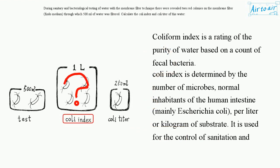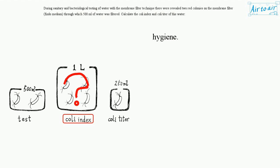Coliform index is a rating of the purity of water based on account of fecal bacteria. Coli index is determined by the number of microbes — normal inhabitants of the human intestine, mainly Escherichia coli — per litre or kilogram of substrate. It is used for the control of sanitation and hygiene.